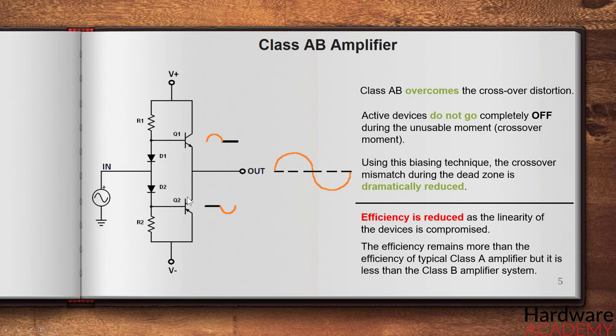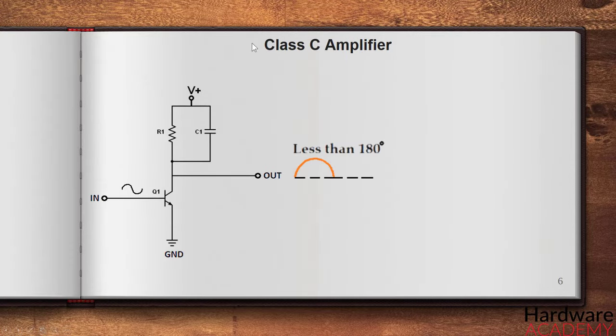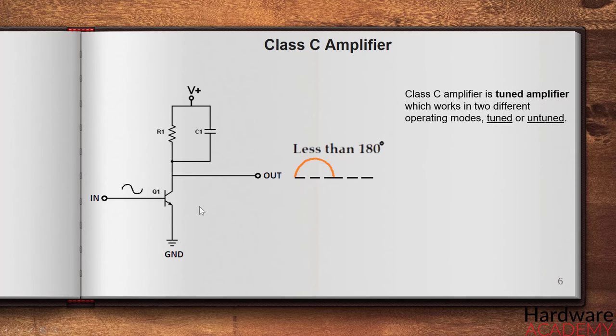Apart from the class A, B, and AB amplifier, there is another amplifier called the class C. It's a traditional amplifier which works differently than the other amplifier's classes. Class C amplifier is a tuned amplifier which works in two different operation modes, tuned or untuned.